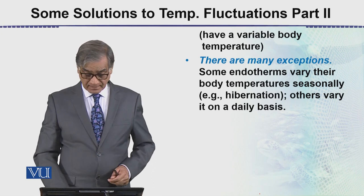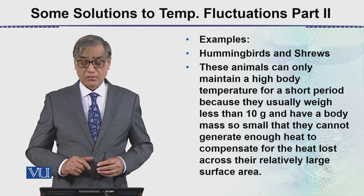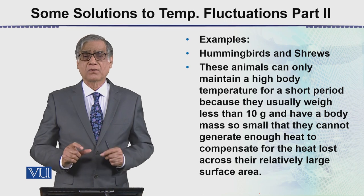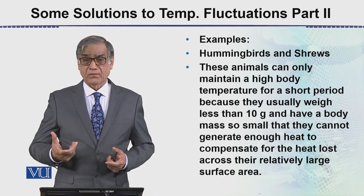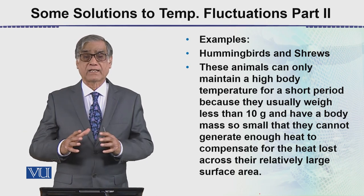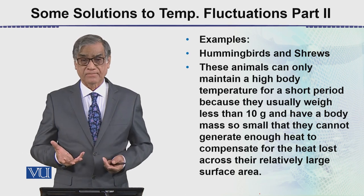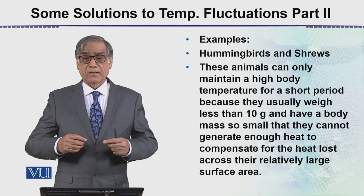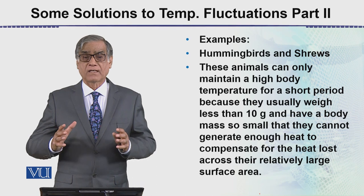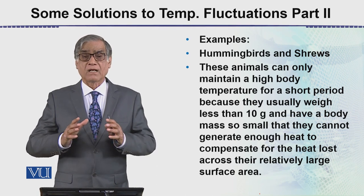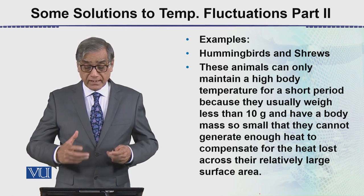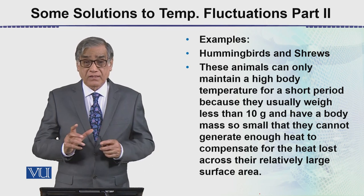There are examples of hummingbirds and shrews. These are very small animals, about ten grams in weight. When body size is small, the surface area is relatively bigger. In this cold environment, heat radiates out. Although these animals are very active, their body temperature can drop quite low.